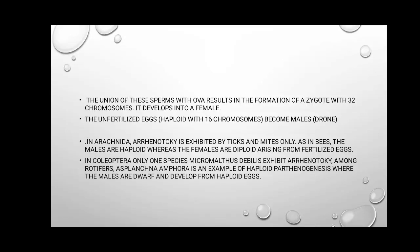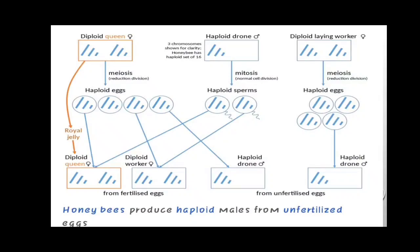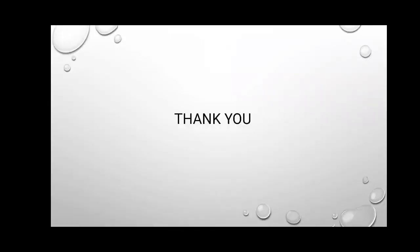This is a diagrammatic representation of honeybees. Unfertilized eggs produce males through Arrhenotoky parthenogenesis. Thank you.